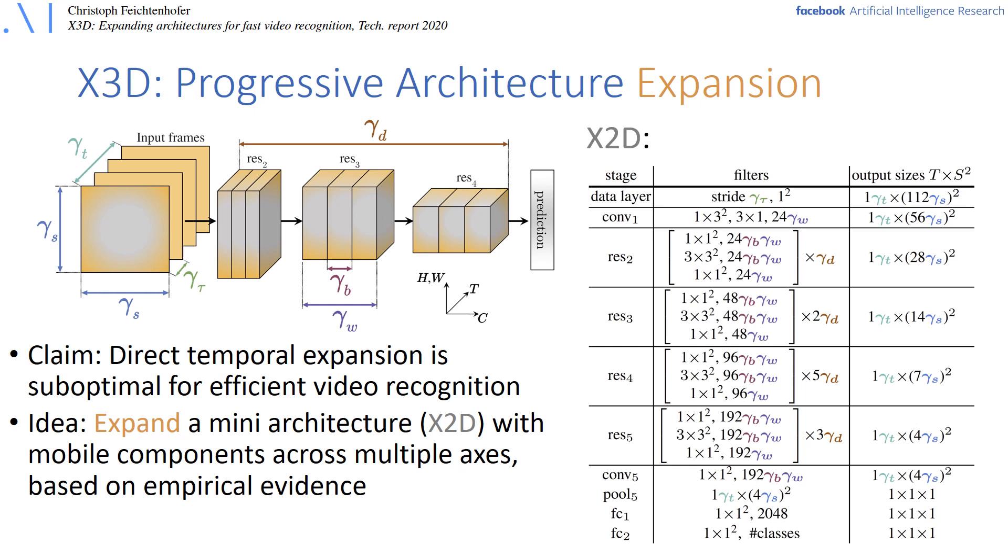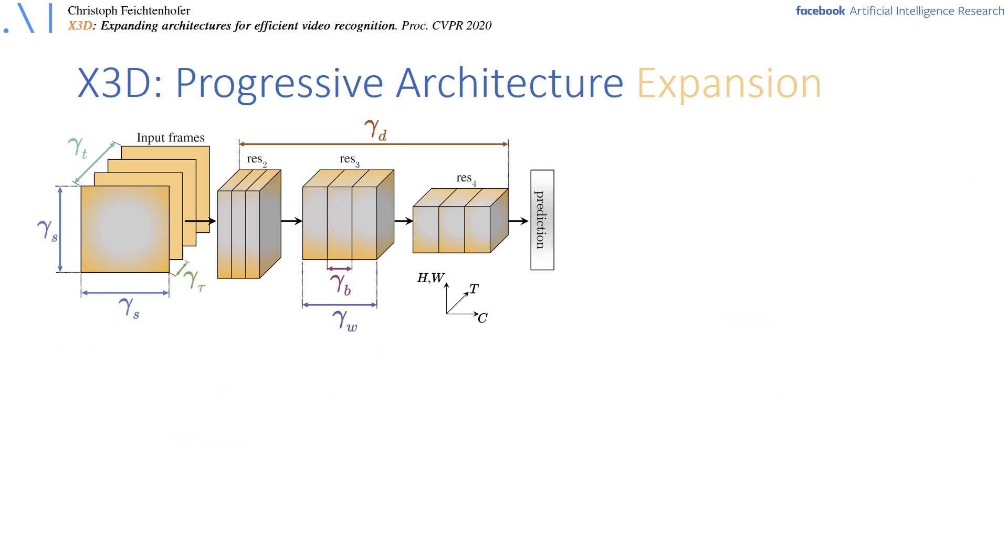Different colorized gamma variables in the table are factors that are used to expand this model. The candidate axes are frame rate, temporal duration for all the activations and the input, spatial resolution for the input and all activations, network depth, the width of the network, and also the width of the bottleneck in the residual block, which is channel-wise 3x3x3 convolution. Importantly, the spatiotemporal convolution in the center of the residual block is channel-wise or also sometimes called depth-wise separable, which are commonly used in mobile networks and have very favorable floating point and parameter tradeoffs.